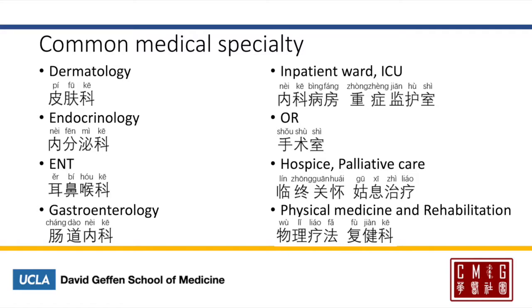For the inpatient ward, you can say 内科病房. And the intensive care unit, 重症监护室 — 重症 meaning critical, and 监护 meaning to monitor. The operating room will be 手术室. Hospice will be 临终关怀. And palliative care, 姑息治療. The difference being hospice is initiated when life expectancy is less than six months, and palliative care provides relief for pain and distressing symptoms.